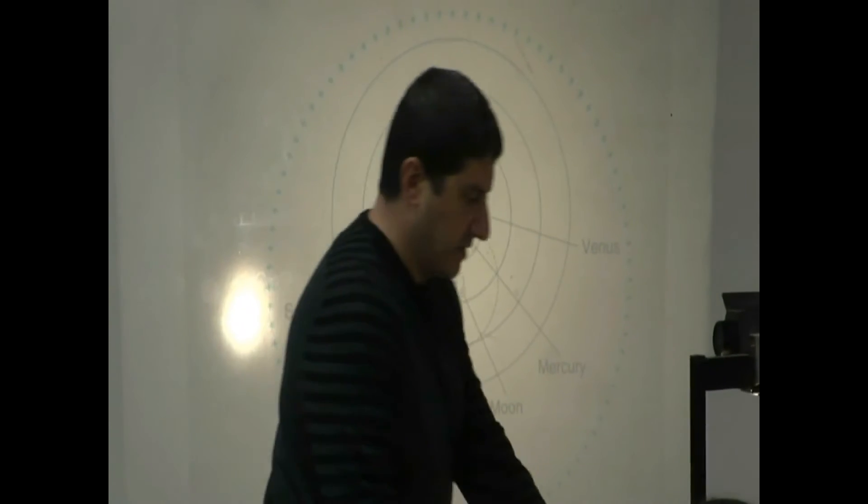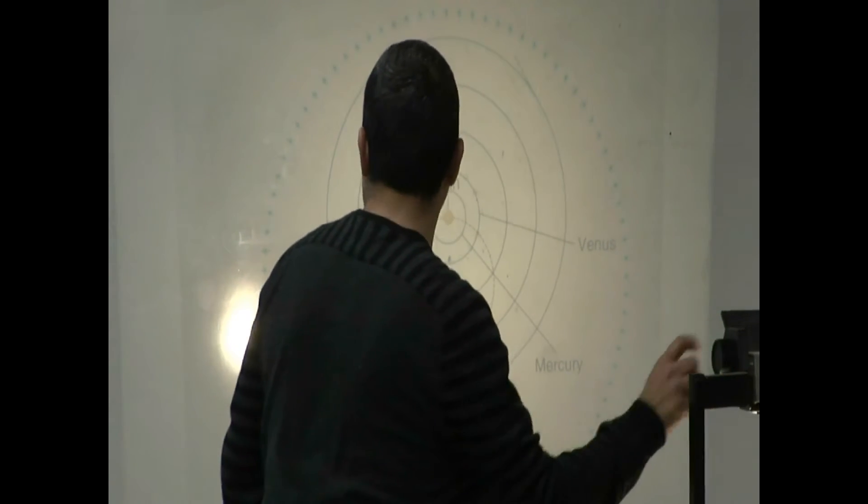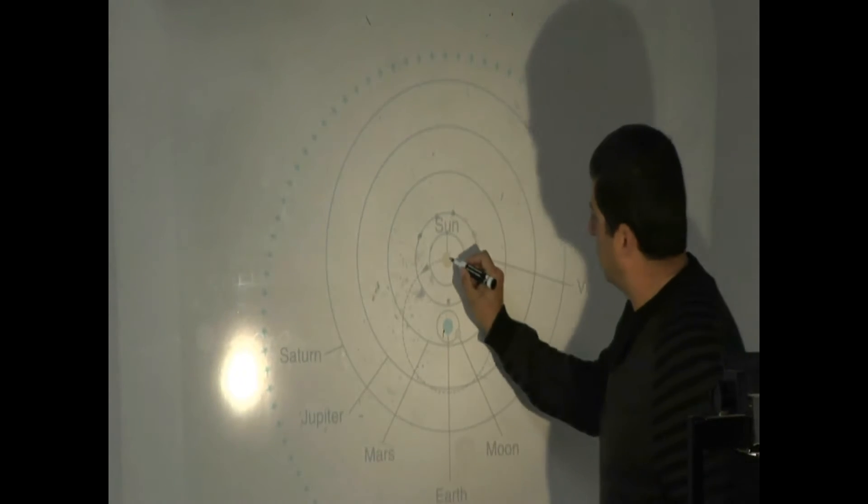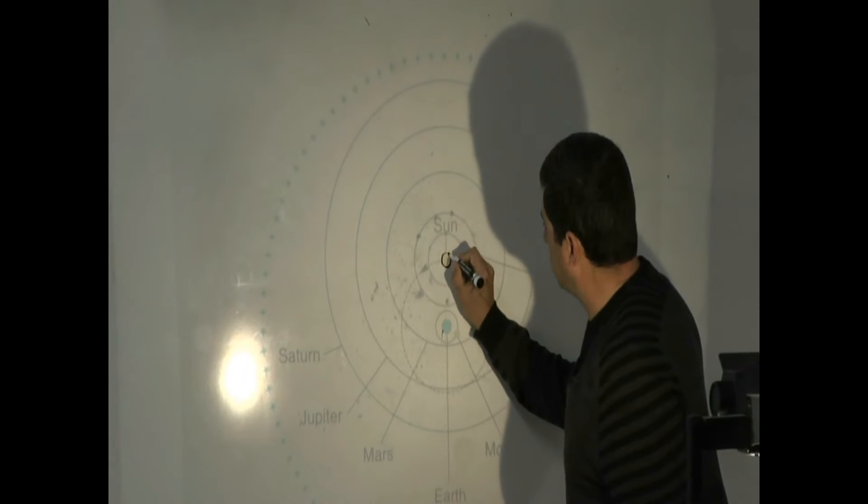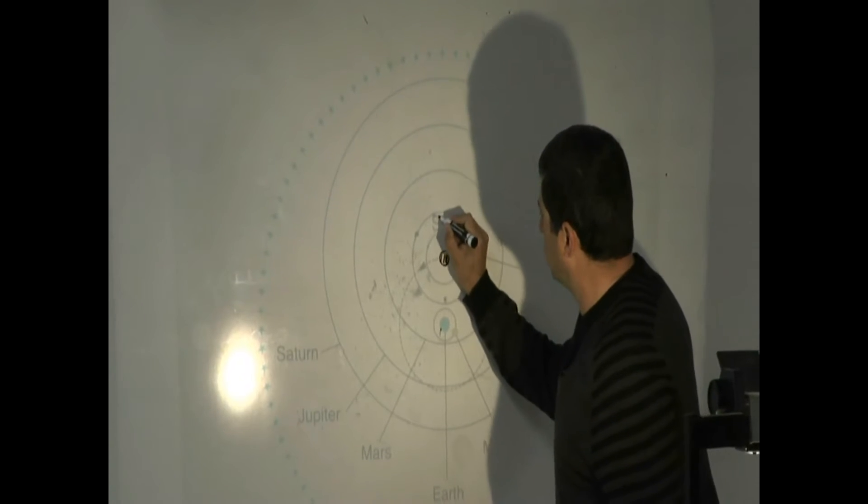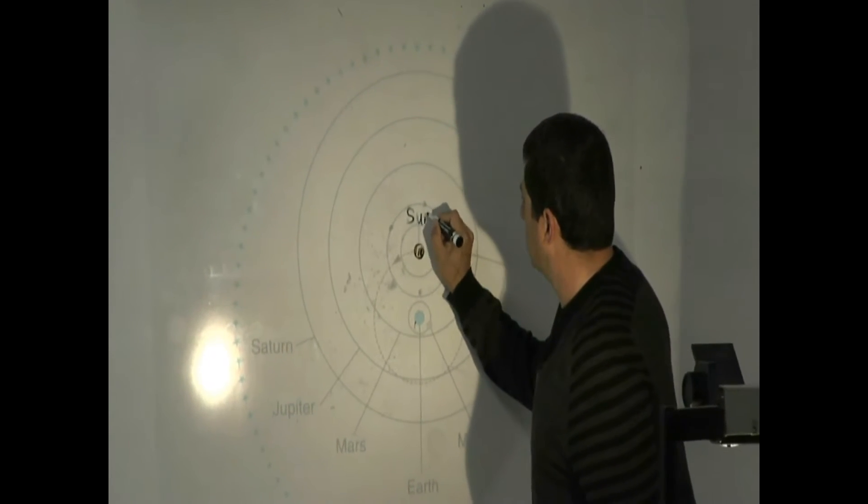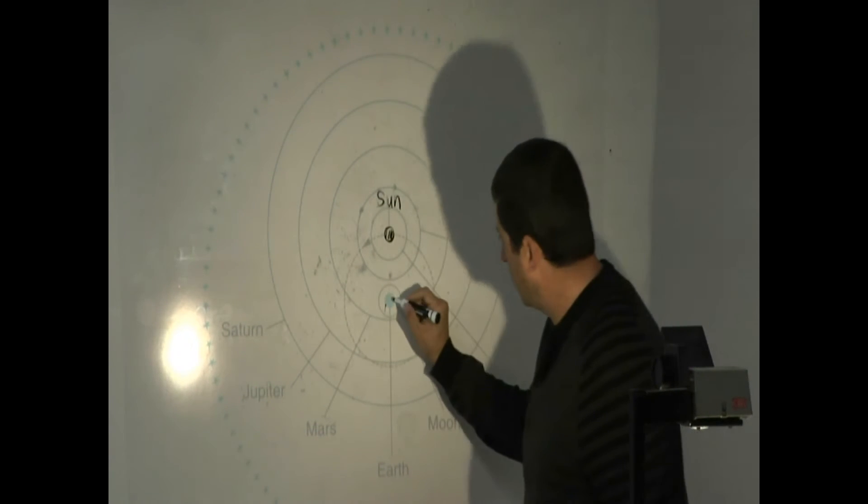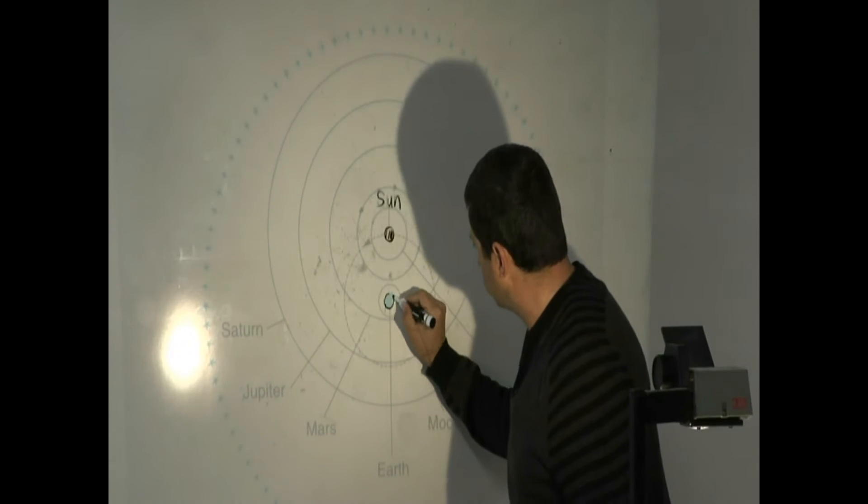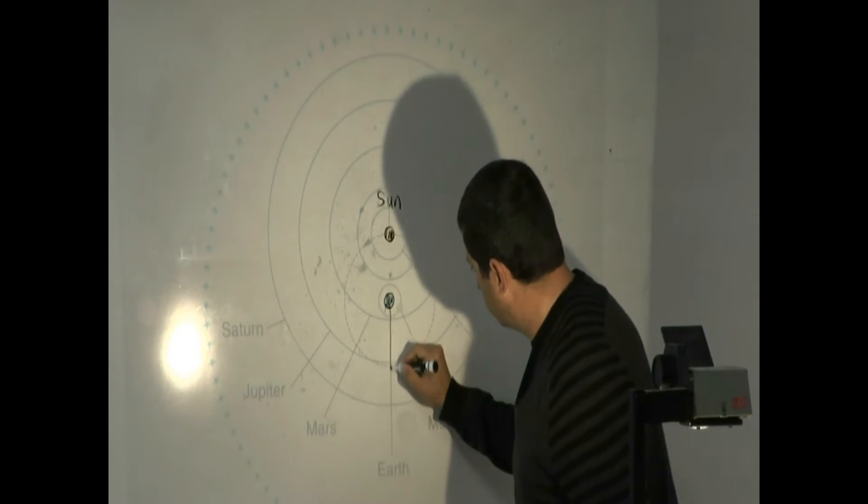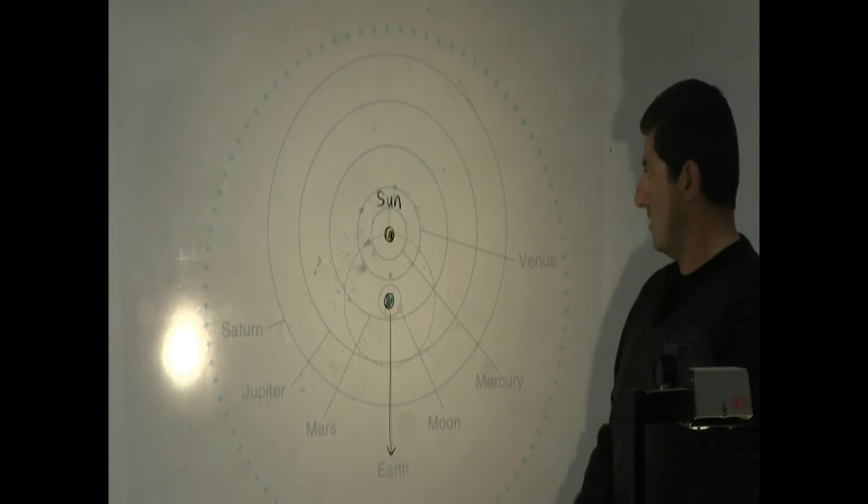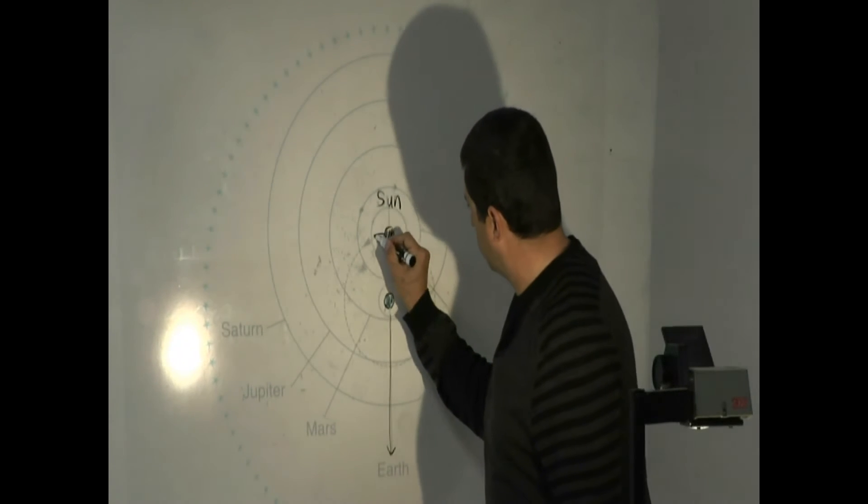Okay, so you've got here Brahe's model of the universe. You see, you've got the sun at the center of the universe. Oh sorry, sorry, I meant the opposite. The earth is the center of the universe. Earth doesn't move at all. So earth is standing still. The sun is moving around the earth.